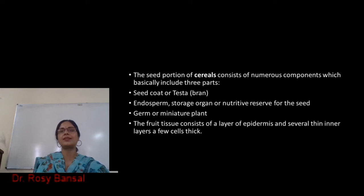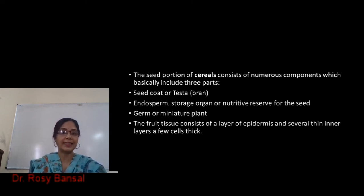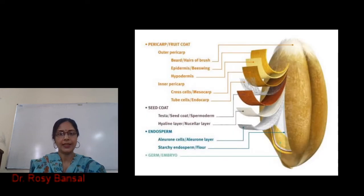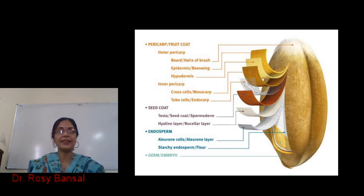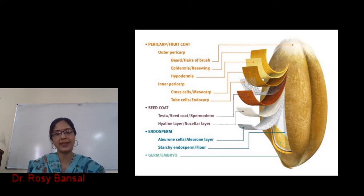The fruit tissue consists of a layer of epidermis and several thin layers, and these thin layers have a few thick cells. As you can see in the wheat grain diagram, there is a central crease depression in the center, then the pericarp as the outer covering, then the seed coat, the endosperm, and the germ part lying below.